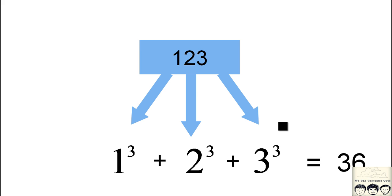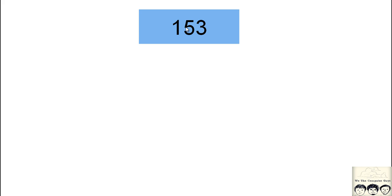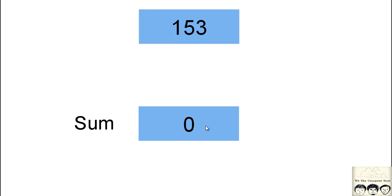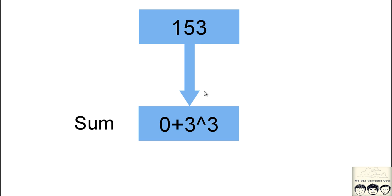Now let's look at the algorithm we will be using to implement our code. We have 153 and we will use another variable called sum, initially defined as 0. The first thing we do is pluck out the digit in the units place, which is 3, cube it, and add it to our sum. So our sum will be 27.